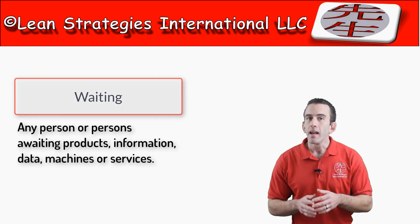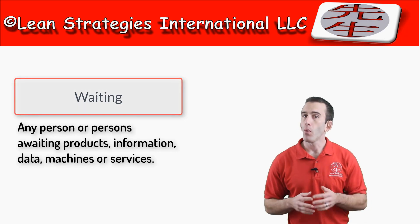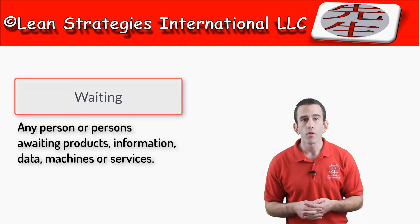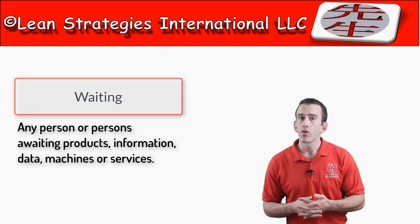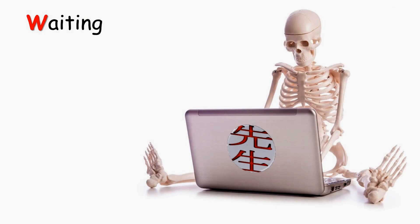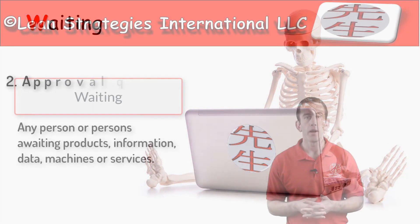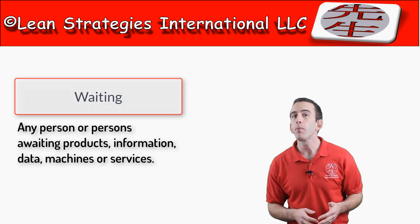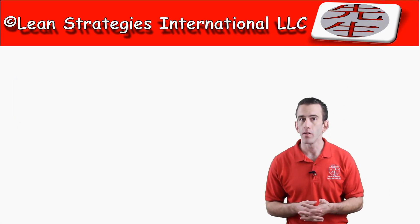Another type of muda is the waste of waiting. This can be defined as any person or persons awaiting products, information, data, machines, or service. This waste is often associated with long setup times, lengthy changeovers, and approval queues throughout your value stream.